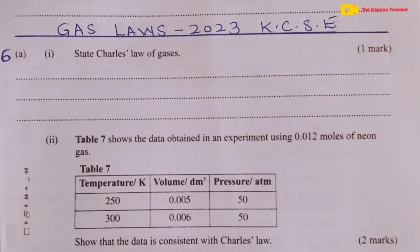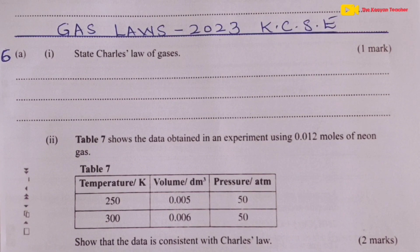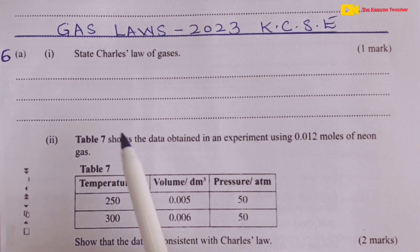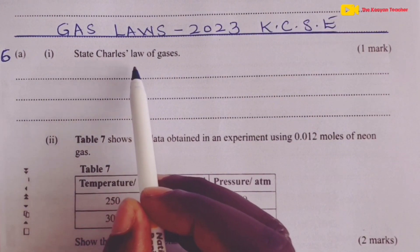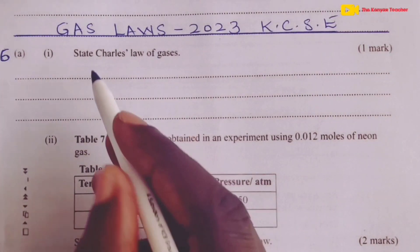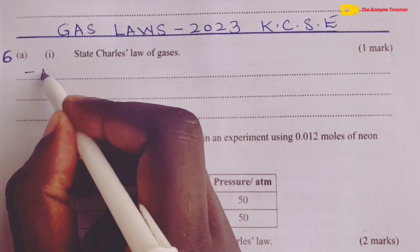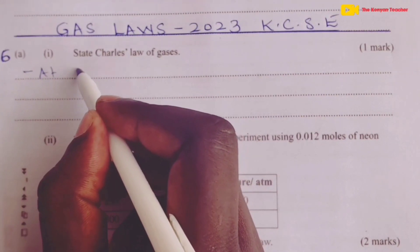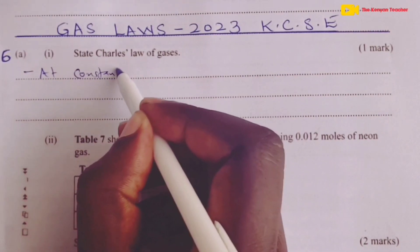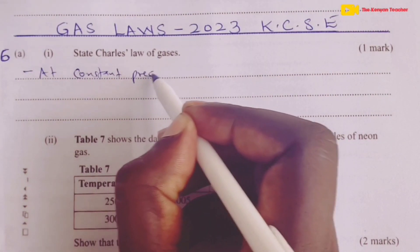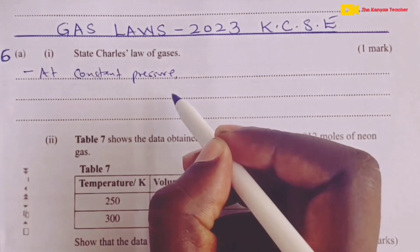Gas laws as tested in the year 2023 KCSE chemistry paper 2. Welcome. Number 6A Roman 1: state Charles's law of gases. At constant pressure, Charles's law states that at constant pressure...